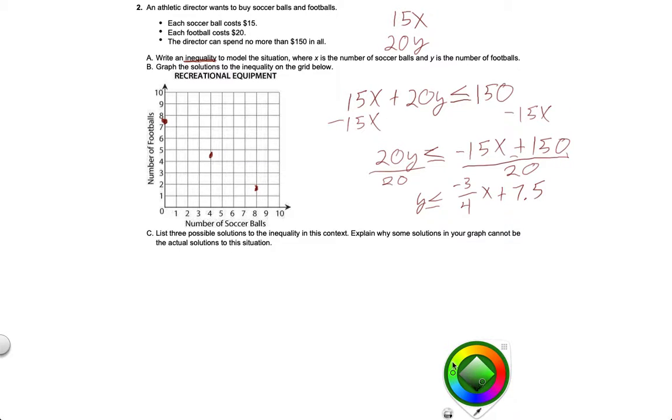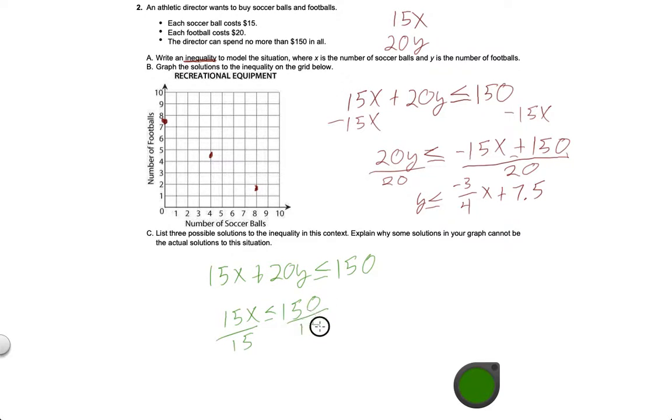We're going to try a different approach that I think will make more sense. We're going to go back to this: 15X plus 20Y is less than or equal to 150. And I want you to think about this scenario. You have $150 to spend. What happens if all you do is buy soccer balls? You still have the $150 to spend, but you got rid of this 20Y because you're not buying any footballs. So, 15X is less than or equal to 150. Divide both sides by 15. And X is less than or equal to 10.